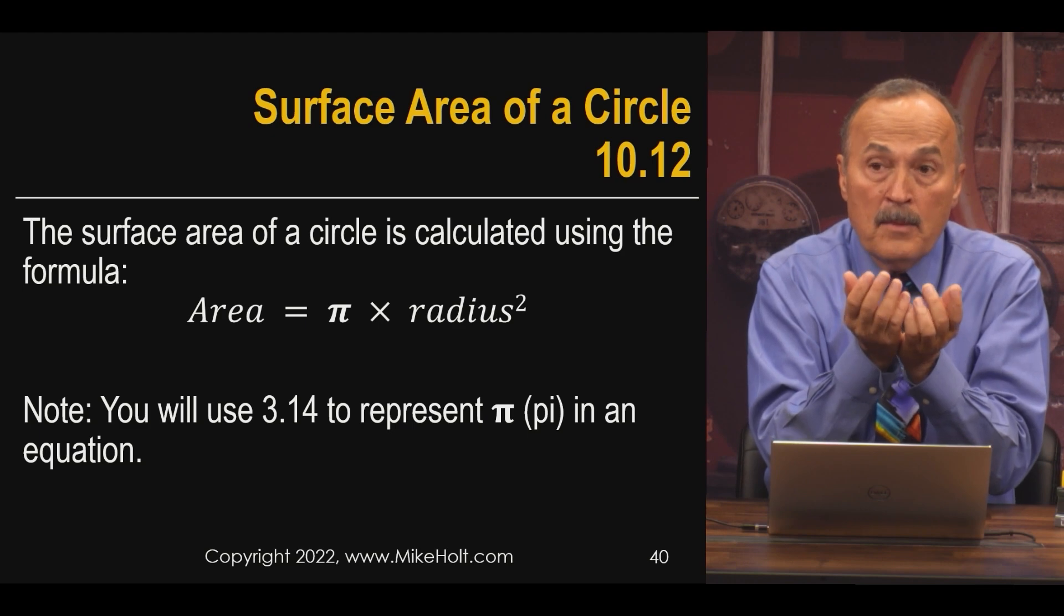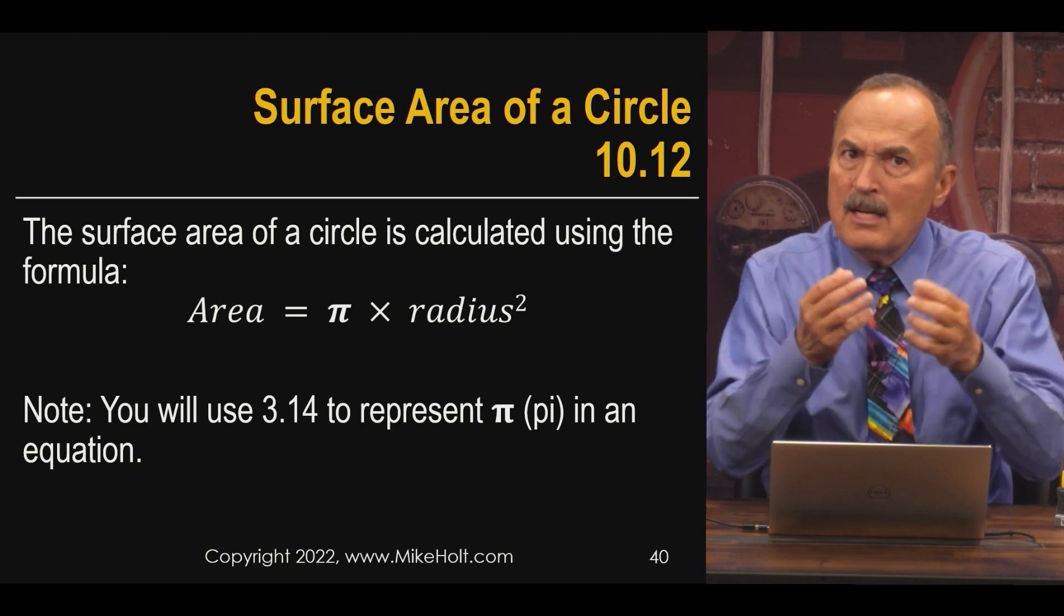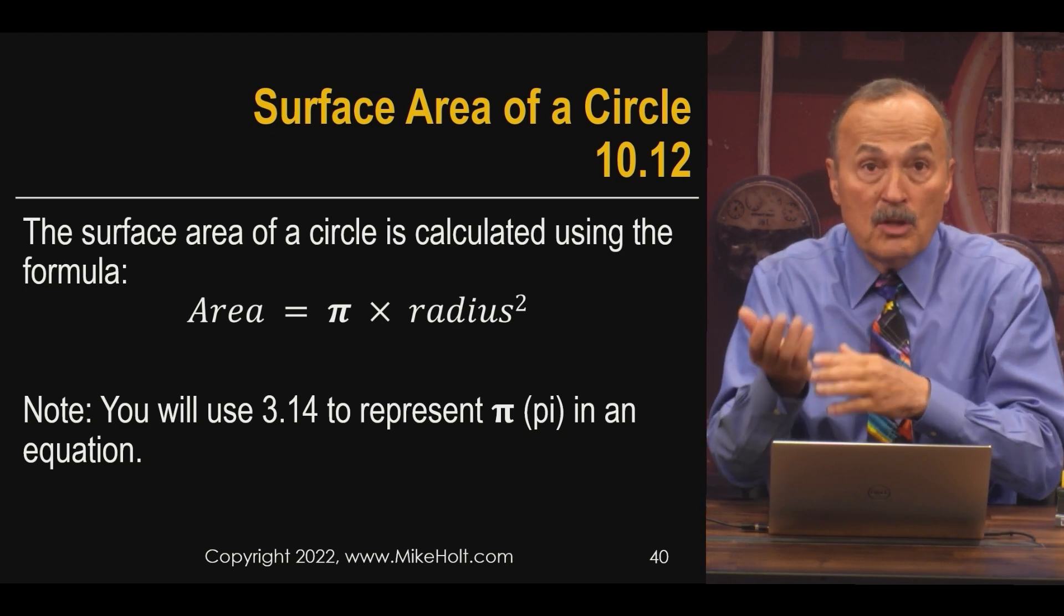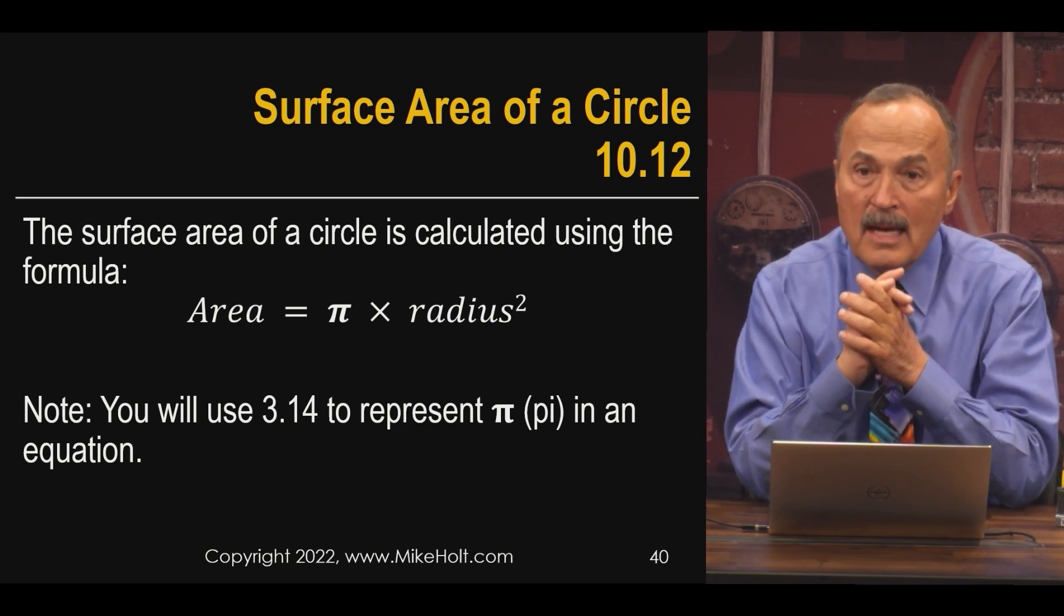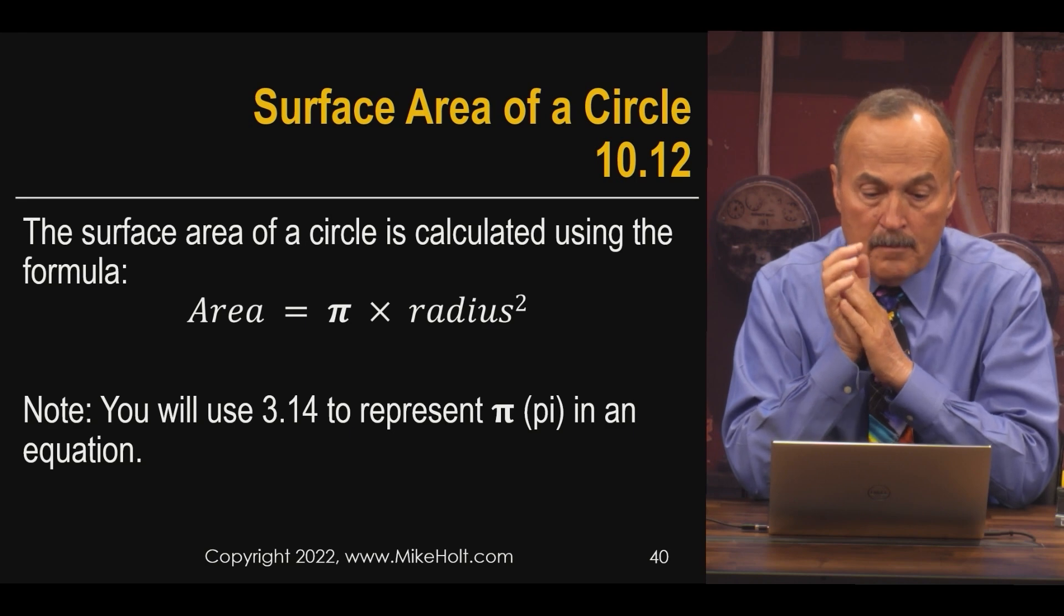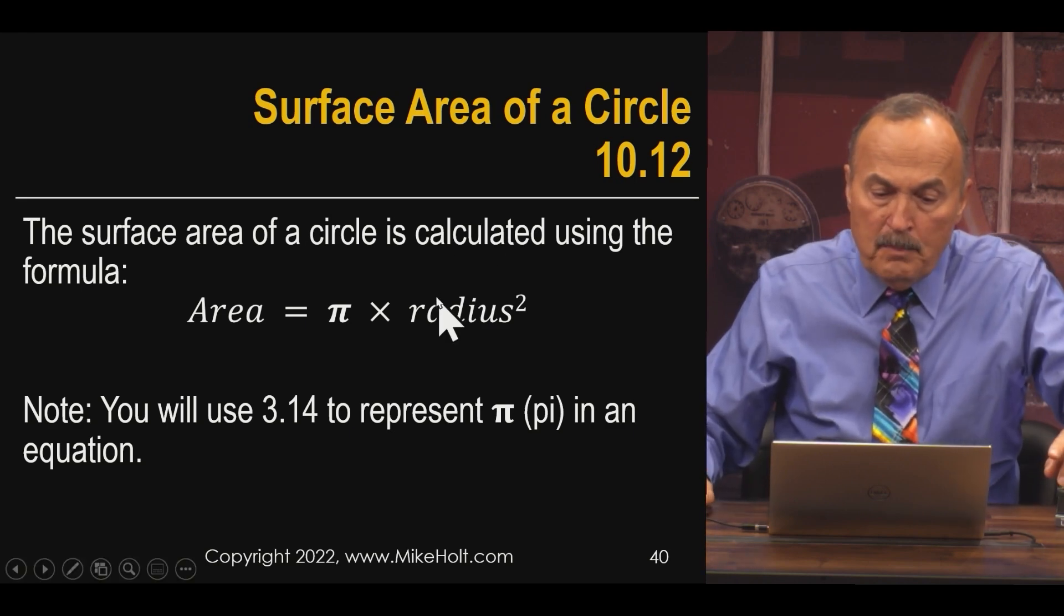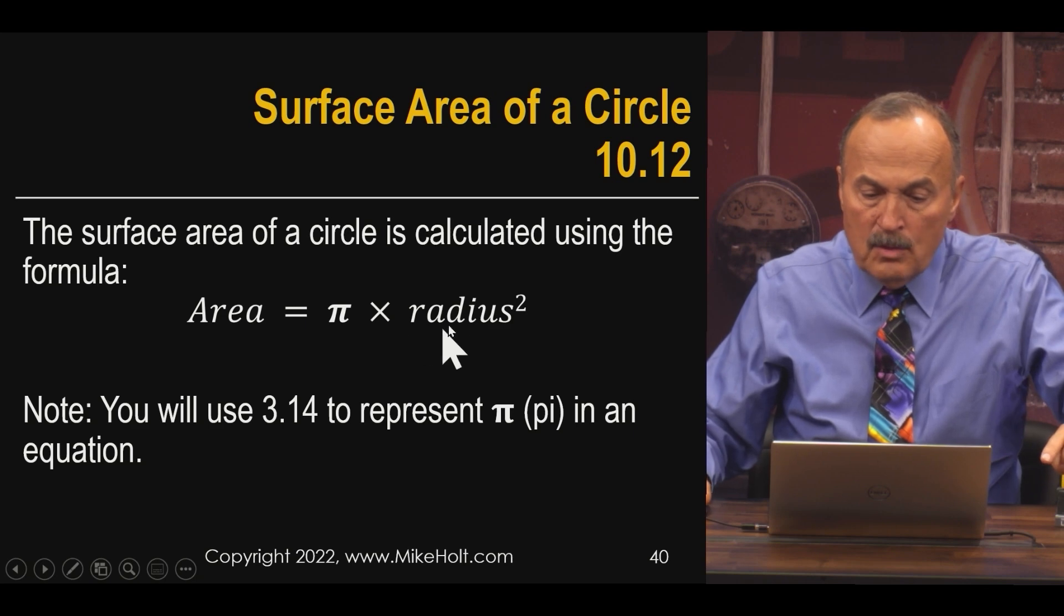If the code book gives you the raceway and the wire, it's easy. But if it gives you the raceway but you've got a unique wire or a cable - because you can't put cables in raceways - then we need to be able to figure out the area of those raceways. The formula is pi times the radius squared, or pi r squared.